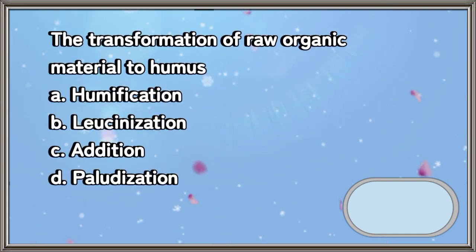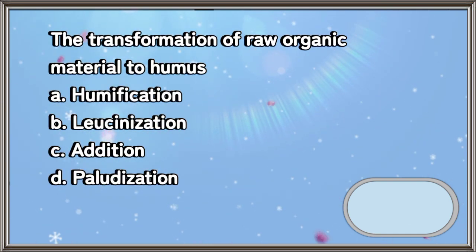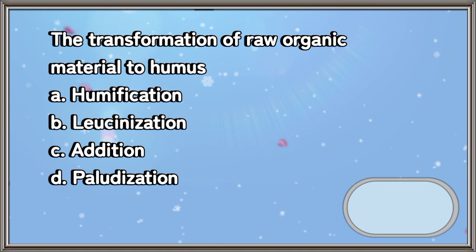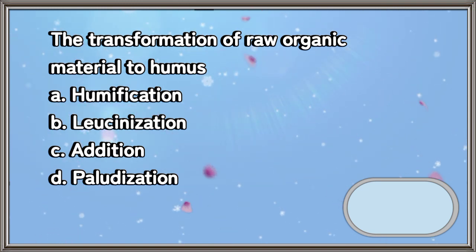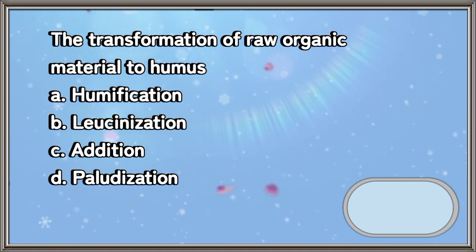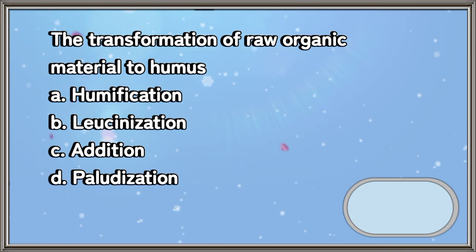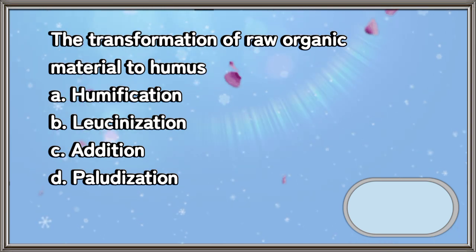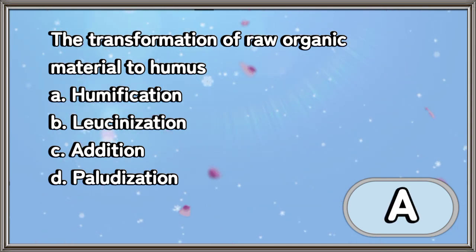The transformation of raw organic material to humus. A. Humification. B. Lucinization. C. Addition. D. Pollutization. The answer is letter A.